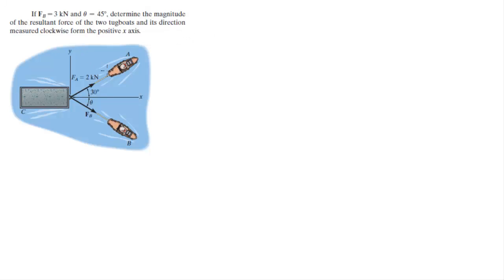Alright guys, now we're going to do this problem that says if FB is 3k and theta is 45 degrees, determine the magnitude of the resultant force of the two tugboats and its direction measured clockwise. So I'm going to redraw this triangle right here.